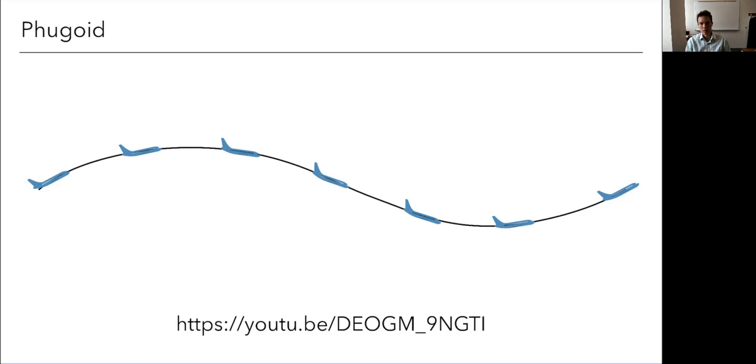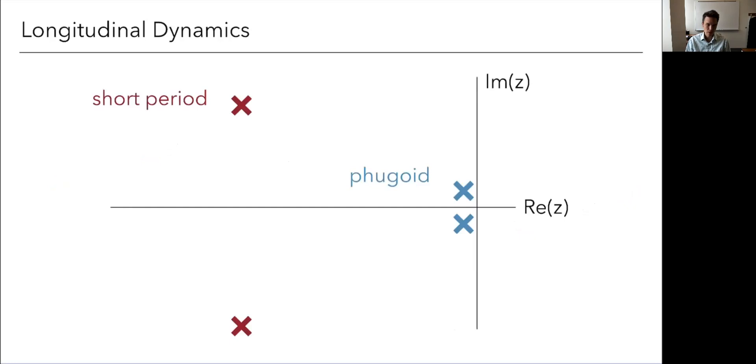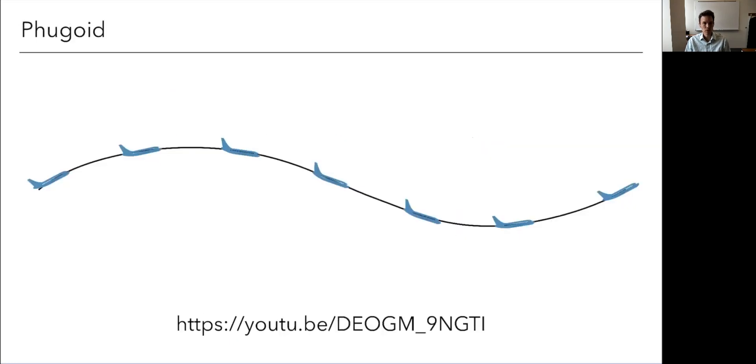It's a very slow, it's lightly damped. So this will generally decay eventually, but the damping is so low, it's going to take a long time. We call it the fugoid mode. We also call it sometimes a long period, I guess, to contrast from short period to long period. But more commonly, it's called the fugoid mode.